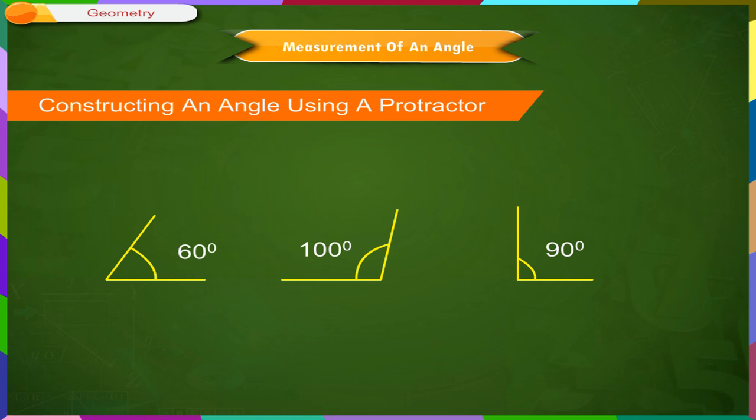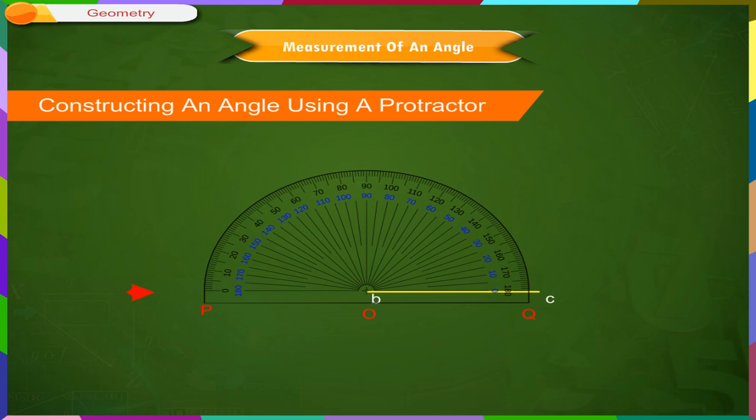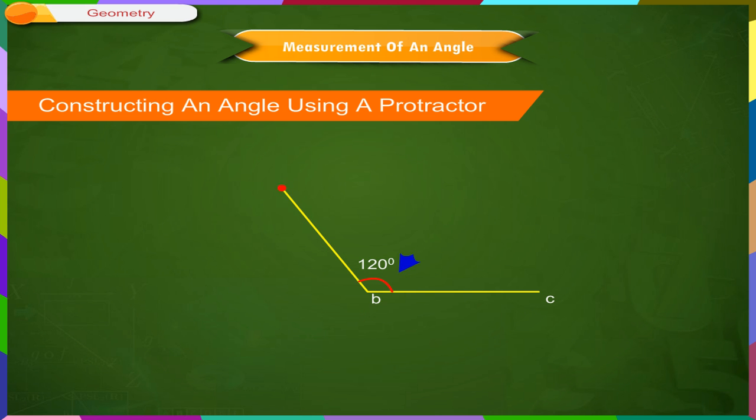Let us construct an angle of 120 degrees. The required steps are as follows. Draw a line segment BC which is one of the arms of the angle that is to be constructed. Place the protractor with its point O on the point B of the line segment BC. Align OQ along the edge BC. The protractor has two-way markings. We consider the scale which has 0 degrees near the point C for construction. Mark point A next to 120 degrees marked on the scale. Align OQ along the edge BC. Join points A and B. Angle ABC is equal to 120 degrees and is the required angle.